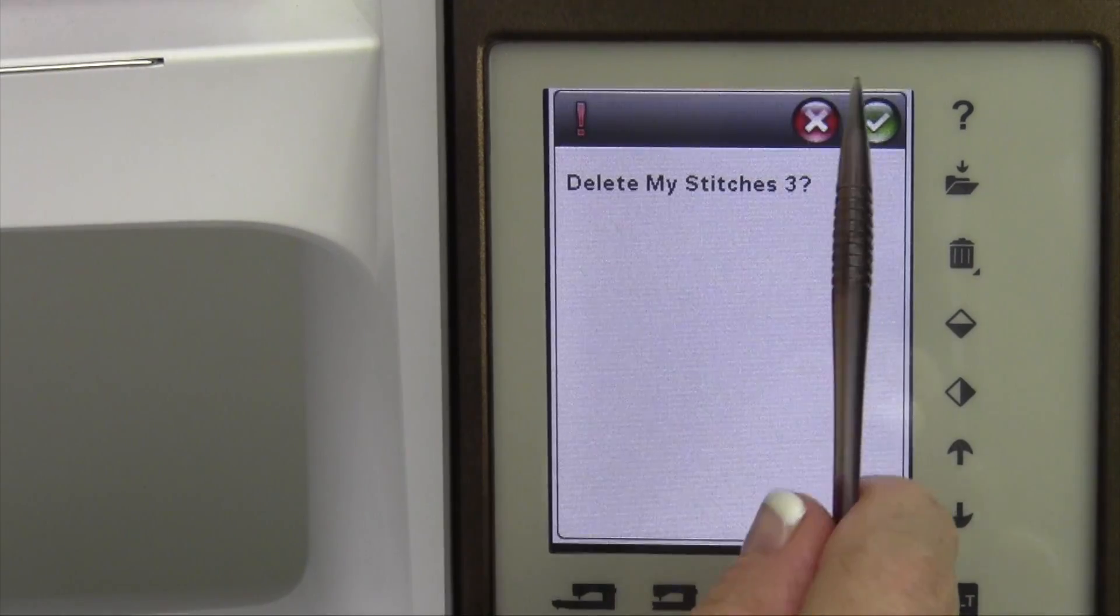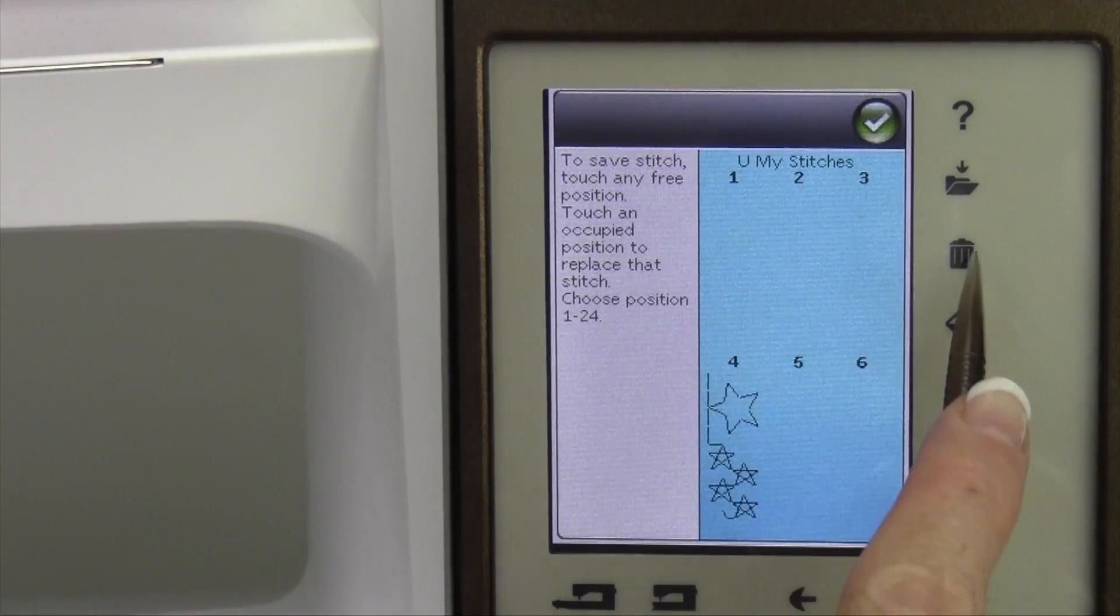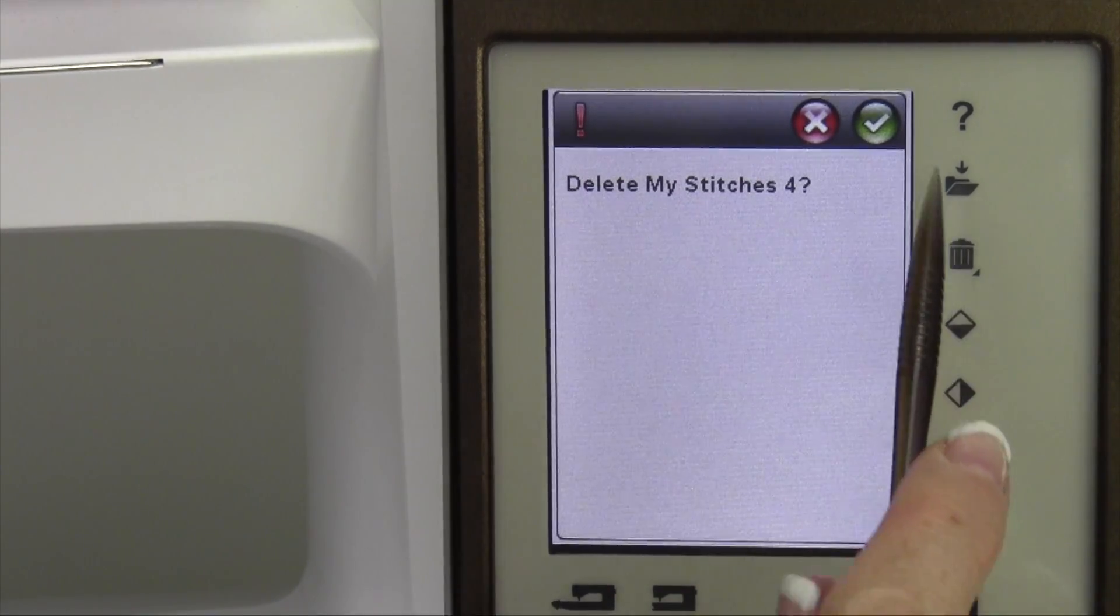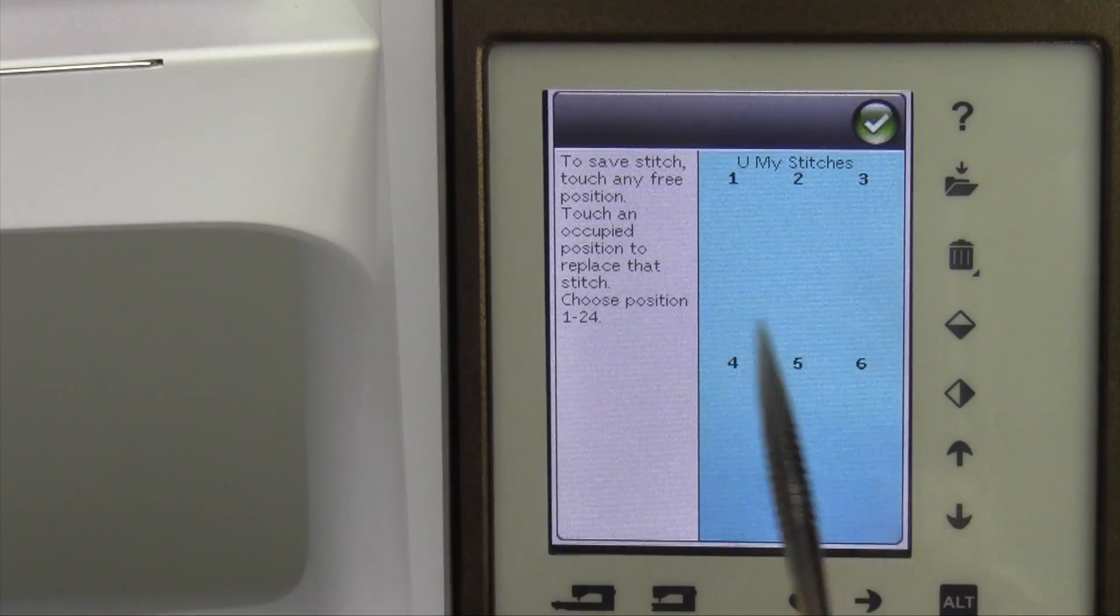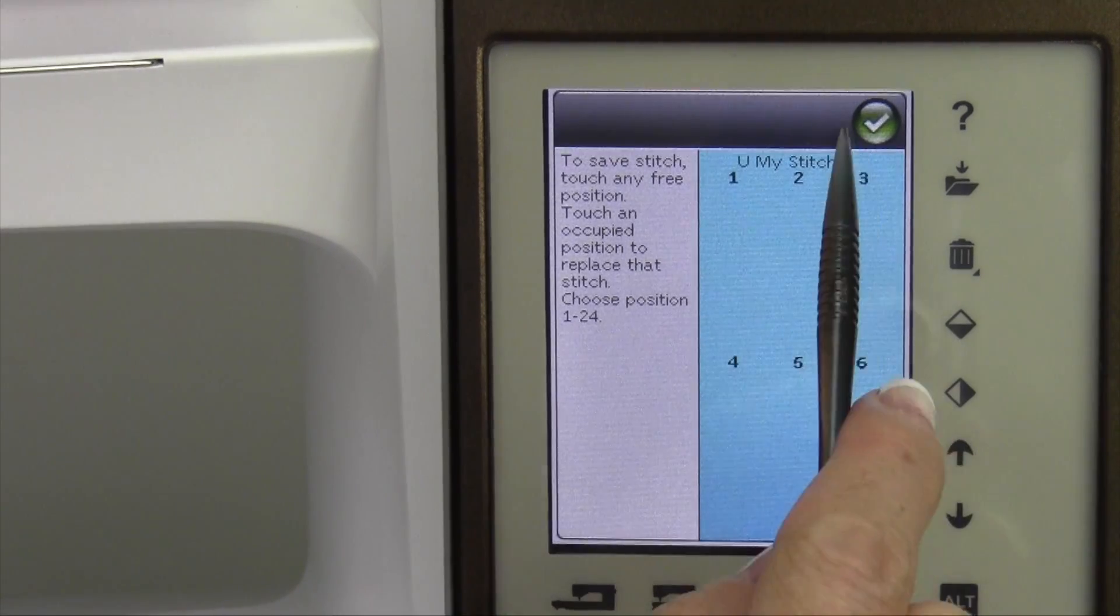If I want to delete again, touch the trash can. That's good, because then you don't accidentally delete what you don't want to delete. Perfect, green check mark. Now I'm empty, and I could go back and have everything at my fingertips.